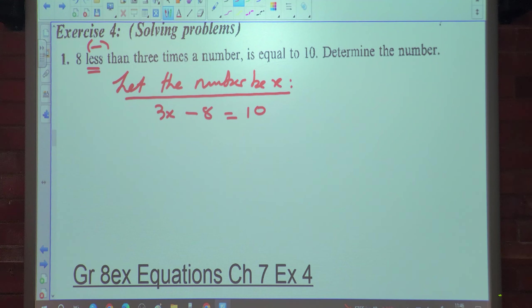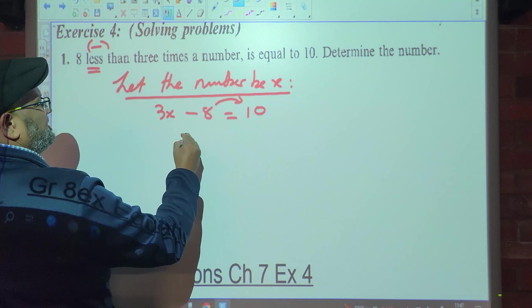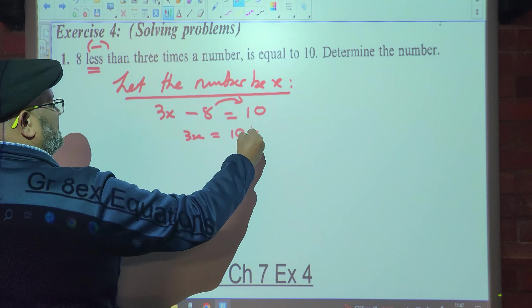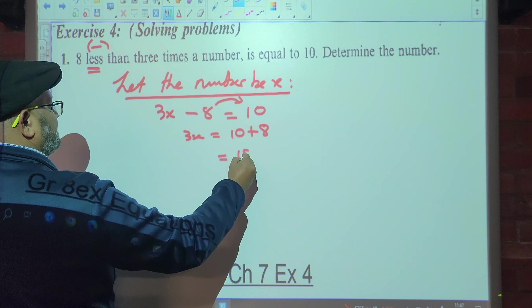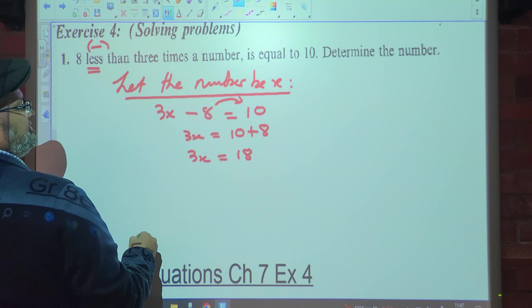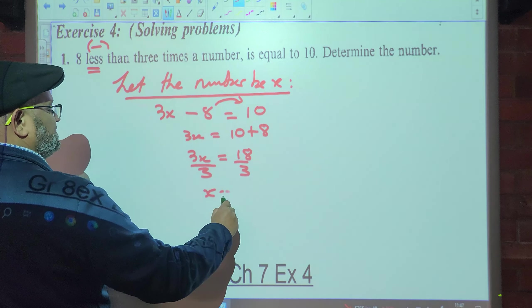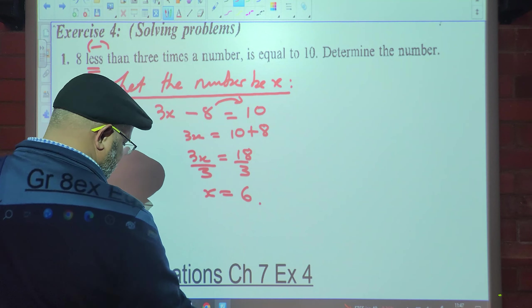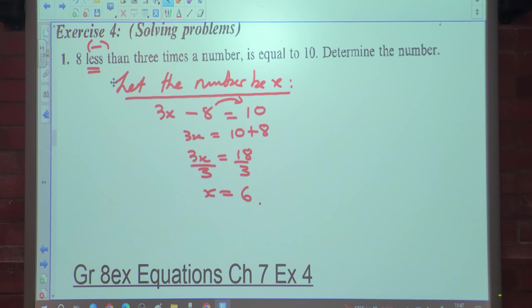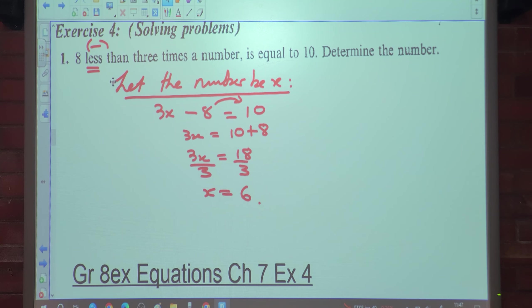Determine the number, so I need to solve for x. Together with the equal sign becomes 3x is equal to 10 plus 8 which is 18. So what do I do now? Divide by 3 both sides, so x is equal to 6. Do you guys understand? Any confusion?